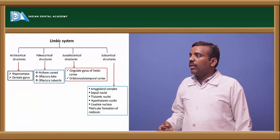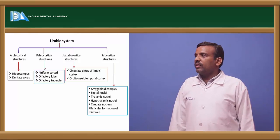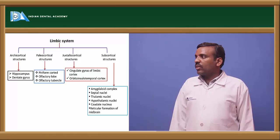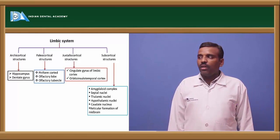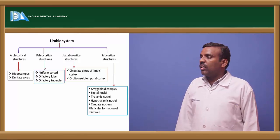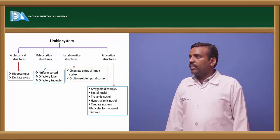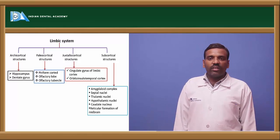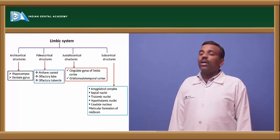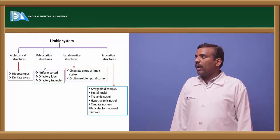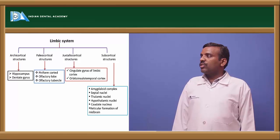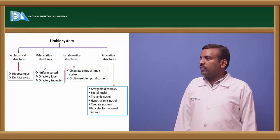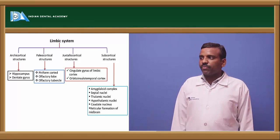The limbic system is divided into four parts: archicortical structures (hippocampus and dentate gyrus), paleocortical structures (piriform cortex, olfactory lobe, olfactory tubercle), juxtallocortical structures, and subcortical structures (amygdala, septal nucleus, thalamic nuclei, hypothalamic nuclei, caudate nucleus, and reticular formation of the midbrain).